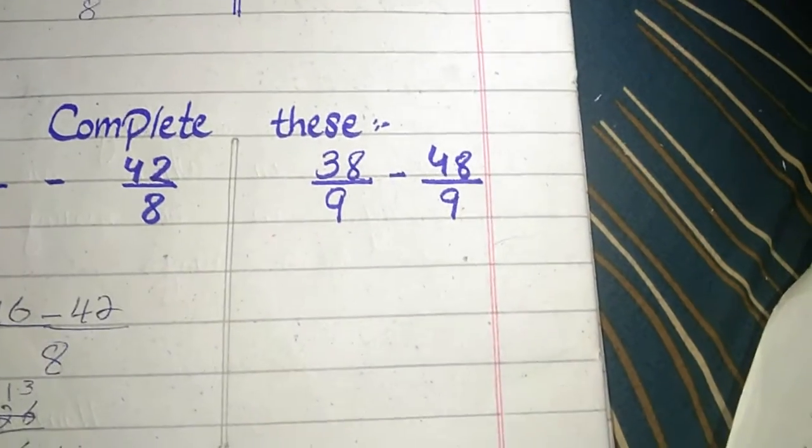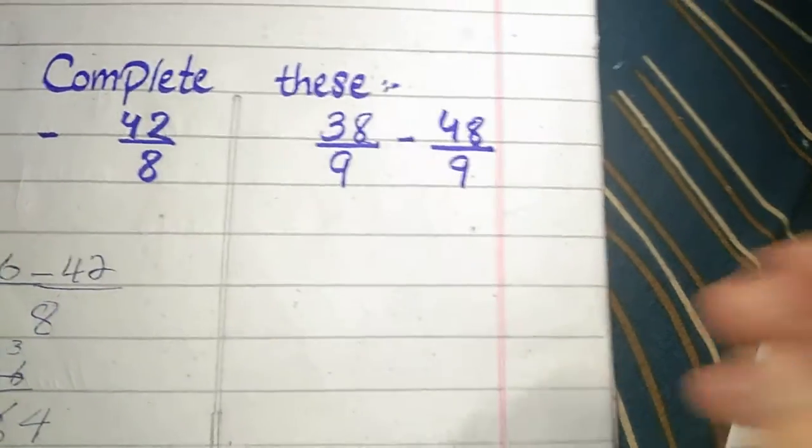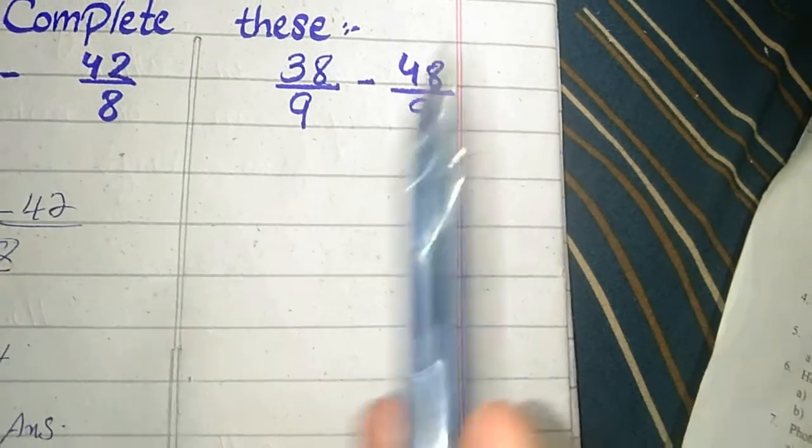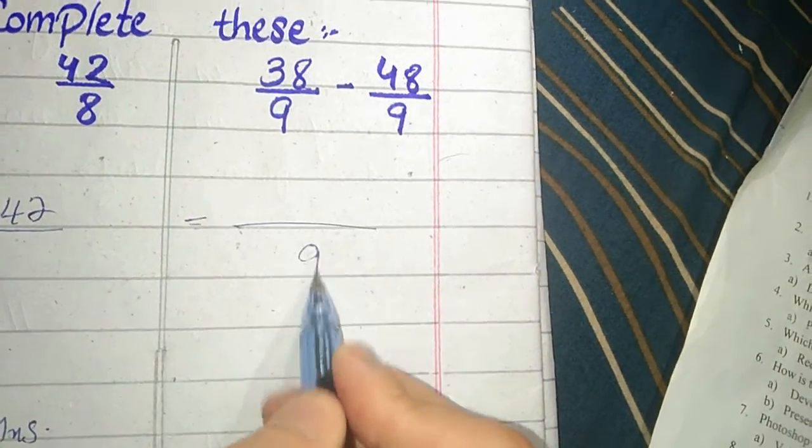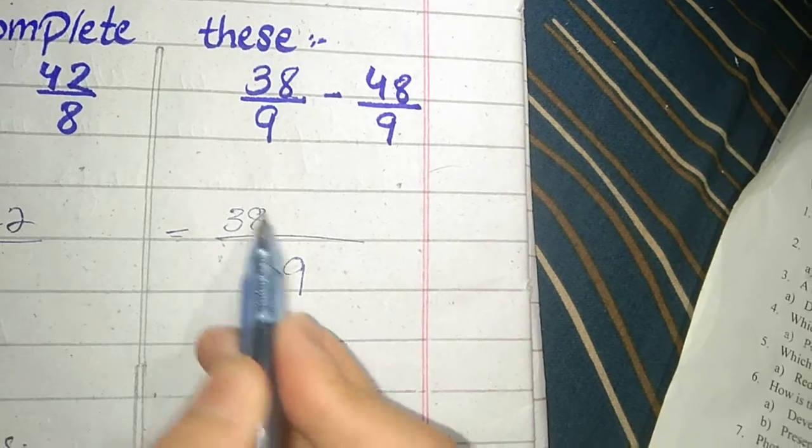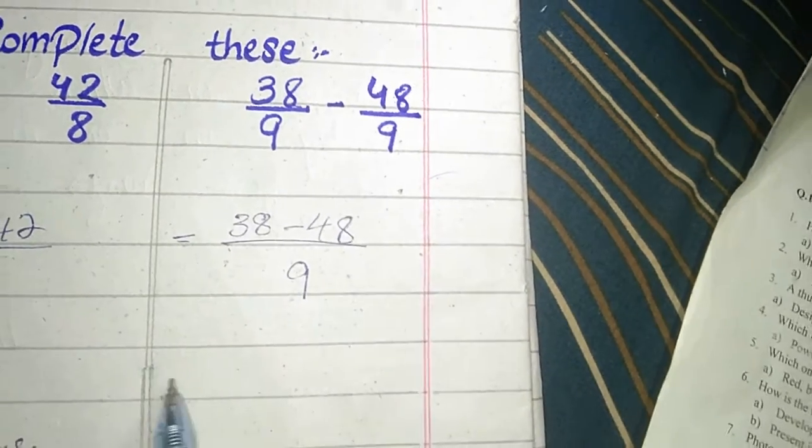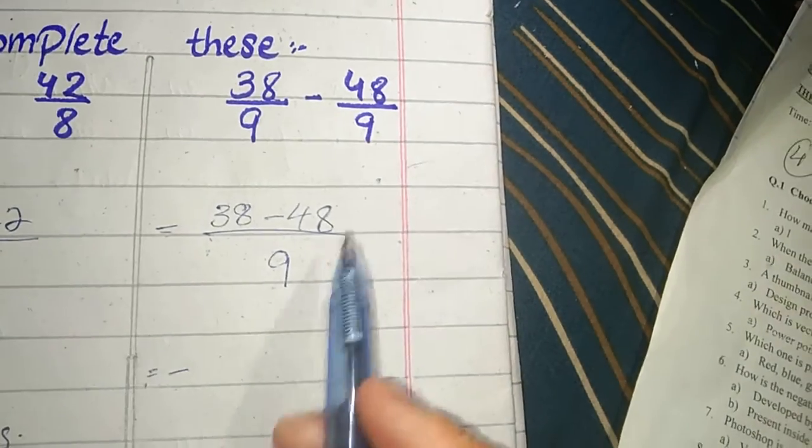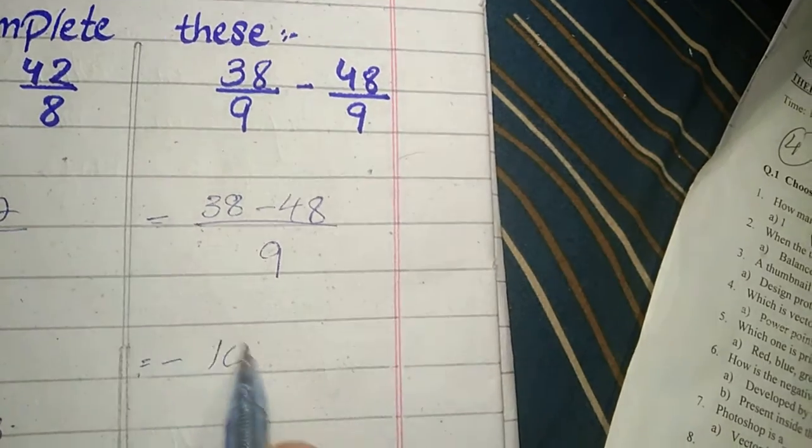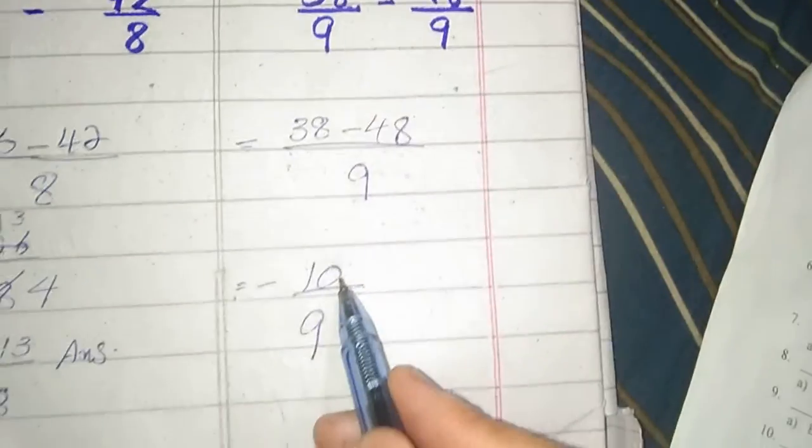Next question is 38 by 9 minus 48 by 9. The denominators are the same, so we write it one time: 9. Then 38 minus 48. Minus sign is here. 48 minus 38 is 10 divided by 9. 10 is an even number,